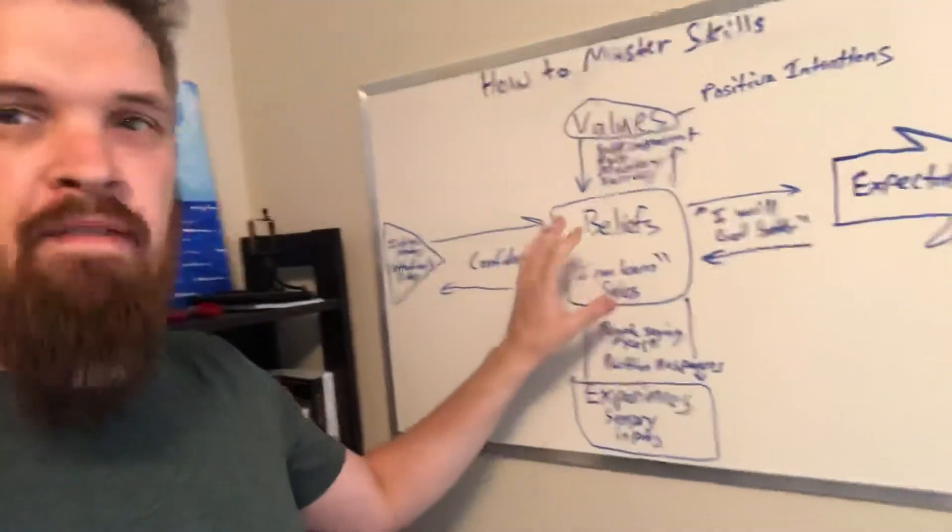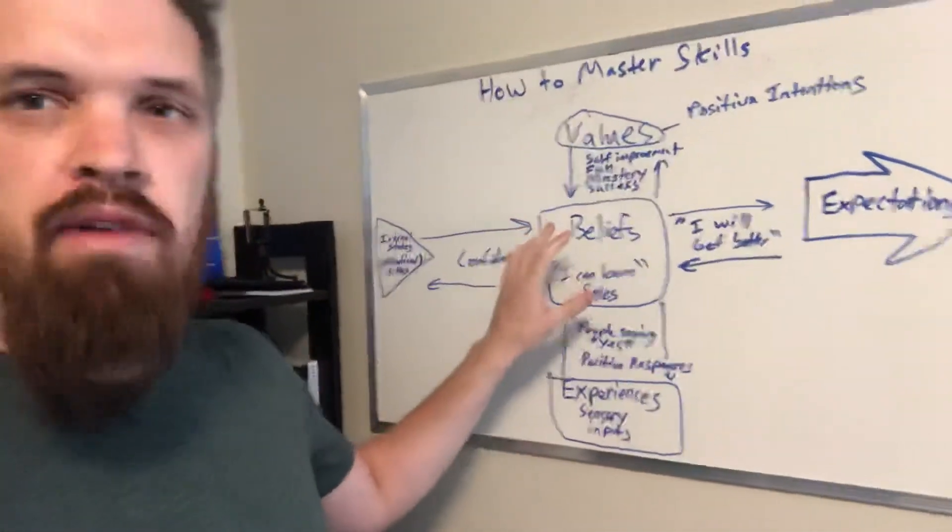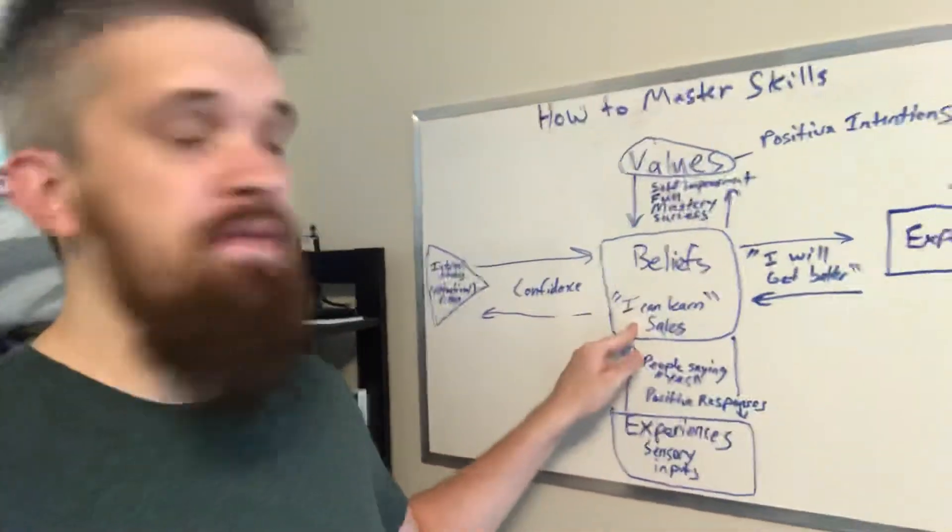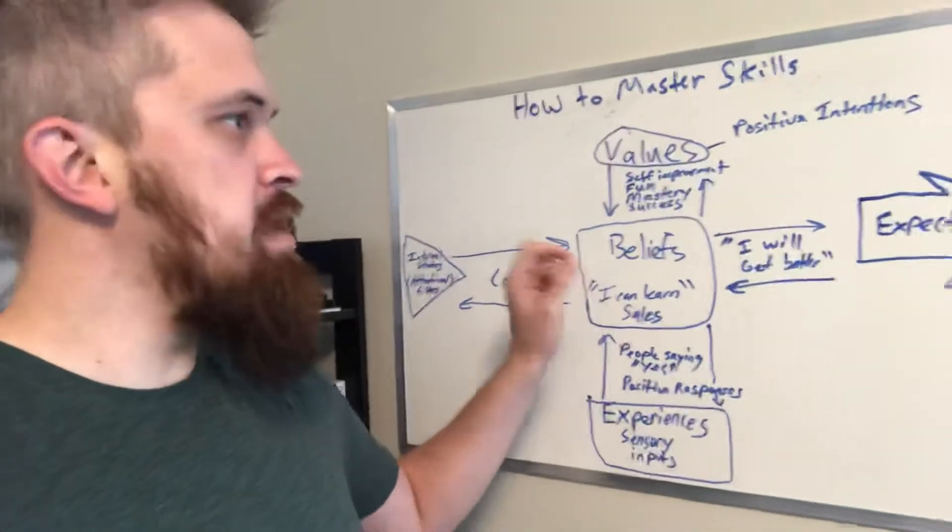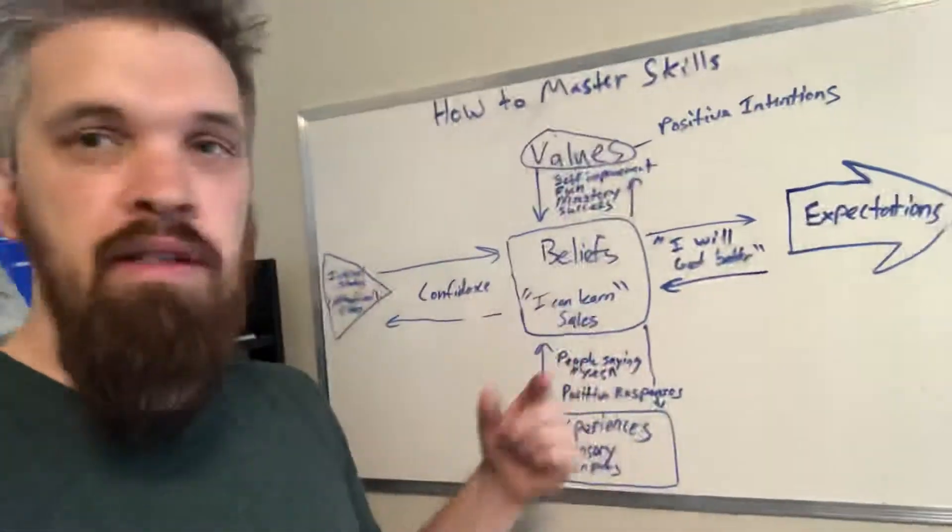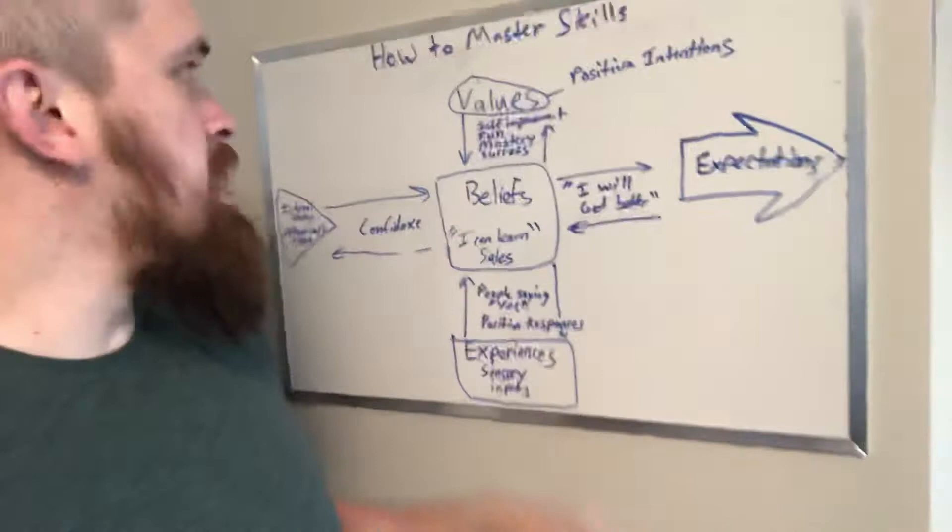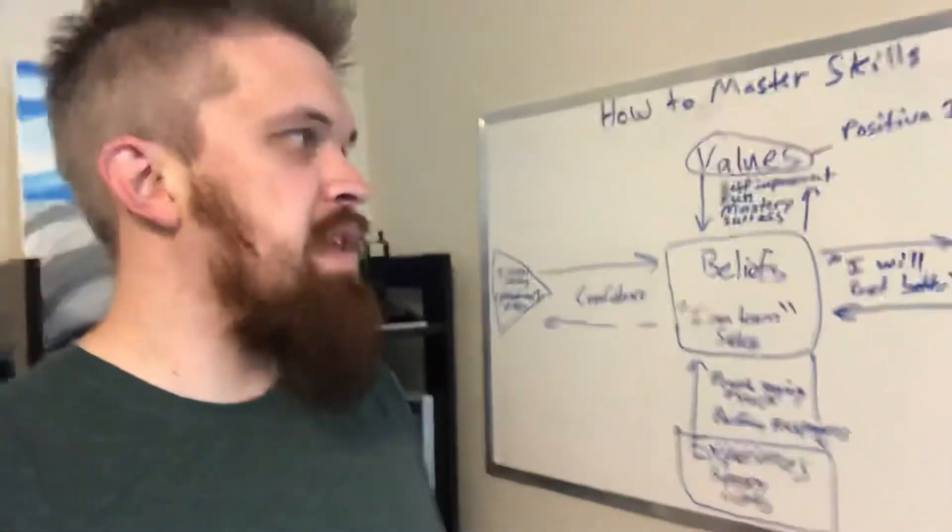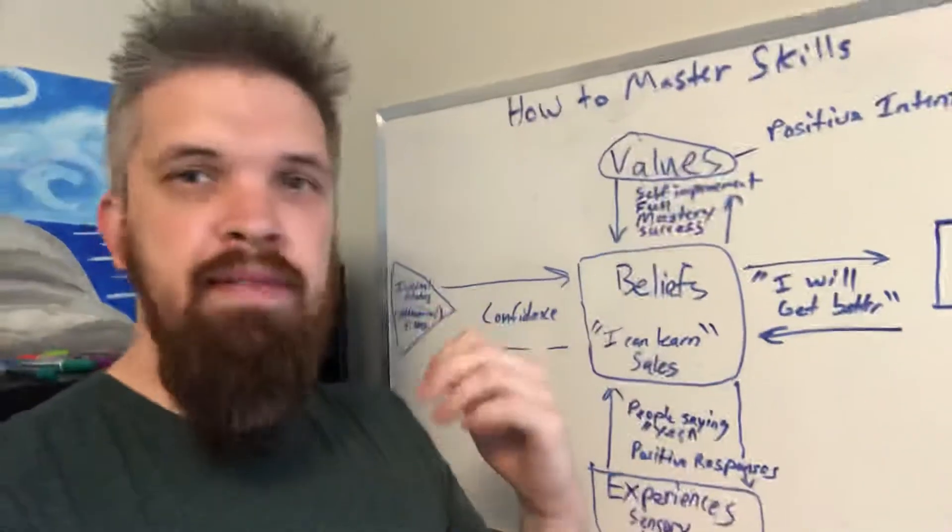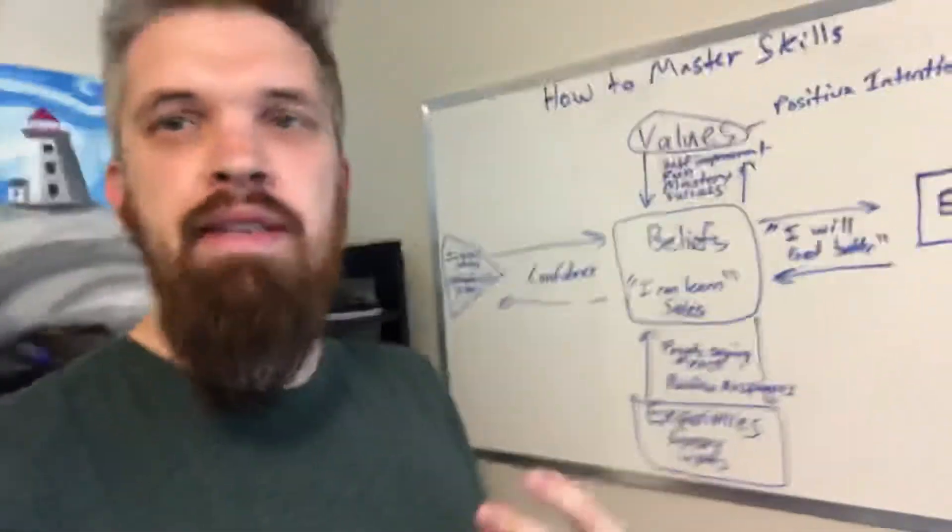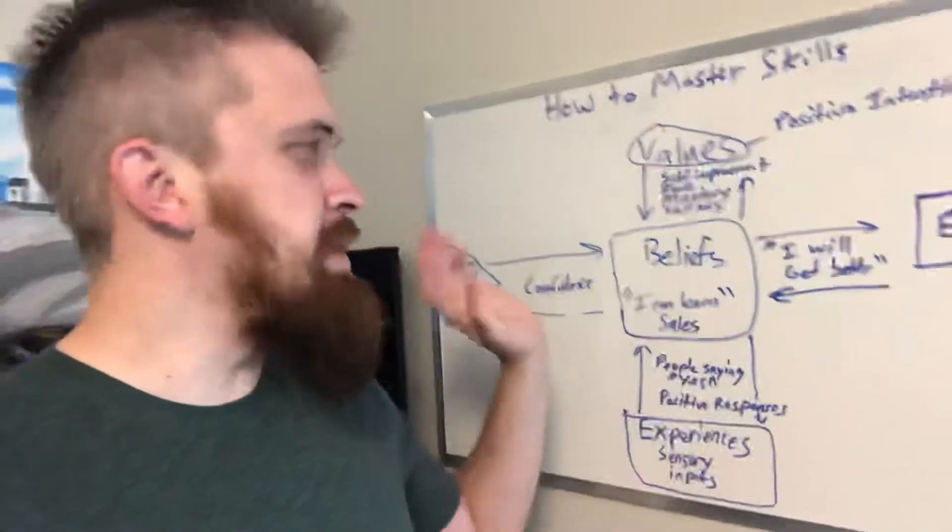So in the middle here, we have beliefs. So let's just say you want to learn a new skill. Your belief, an empowering belief would be I can learn sales and that's tied to your expectations, which is I will get better at sales if I put in the work. That's what it says here. Up here, you have your values or positive intentions and a positive intention would be I want to have mastery over the skill. I want success. I want to have fun, maybe whatever. It's self-improvement.